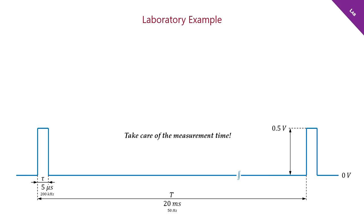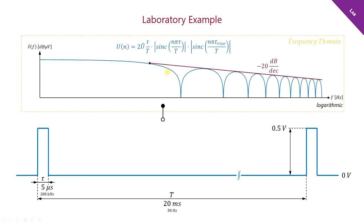Before we go into the EMC lab, let me explain to you what you will see there. I would like to verify what we have learned about detectors today. Therefore, I will apply a short 5 microseconds rectangular pulse train which should repeat every 20 milliseconds. As the pulse arrives that rarely, we need to take care of the measurement time.